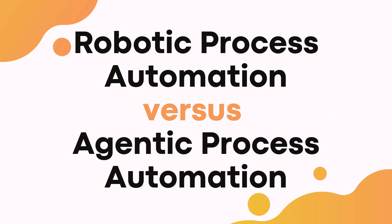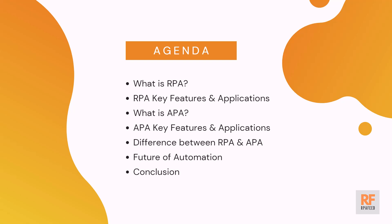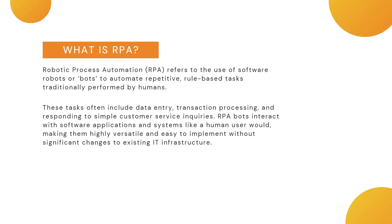Hi guys, welcome to RPA Feed. In today's video we'll see the difference between Robotic Process Automation and Agentic Process Automation. First we'll touch base upon what is RPA, key features and applications of RPA, then what is APA, key features and applications of APA, then the difference between RPA and APA, then we'll talk about the future of automation with respect to these two, and then we'll conclude.